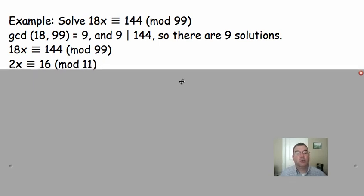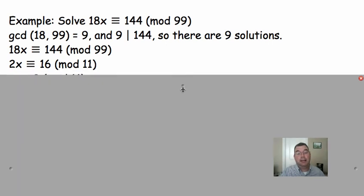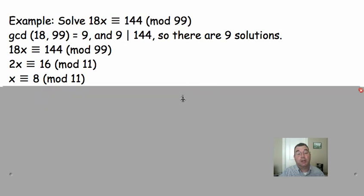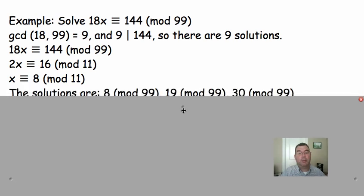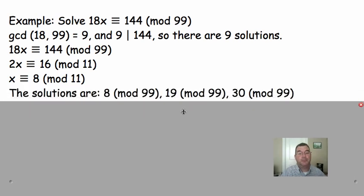And, again, I start off by dividing everything by 9 to make a simpler problem. So, instead of 18x congruent to 144 mod 99, I can say that 2x is congruent to 16 mod 11. And, actually, that works. I can say that x is congruent to 8 mod 11. And, basically, I've solved it. So, anything that is 8 mod 11 is going to be a solution to this equation that I have at the top. So, I'm going to take 8, and I'm going to keep adding 11s until I run out of numbers that are less than 99.